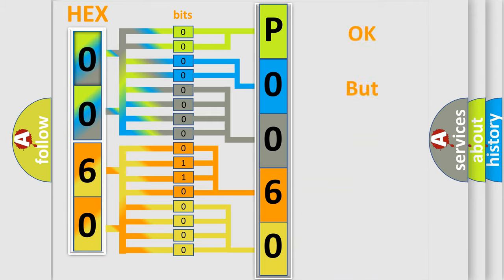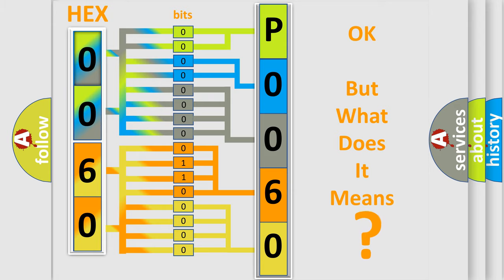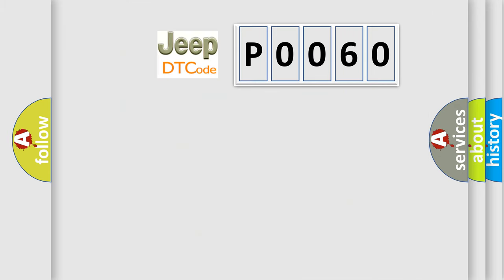The number itself does not make sense to us if we cannot assign information about what it actually expresses. So, what does the Diagnostic Trouble Code P0060 interpret specifically for Jeep car manufacturers?